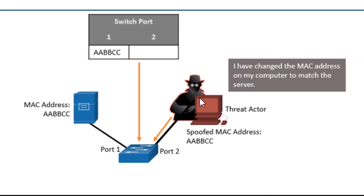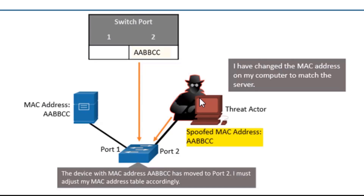Regarding our threat actor — they're connected to a switch on port 2, and they see the MAC address of the server existing on port 1. The switch understands that the server resides on port 1. But if the threat actor spoofs the MAC address of the server and communicates to the switch, the switch will learn that MAC address AABBCC — which was the server's MAC address — is now incoming on the ingress of port 2. Thus the switch says, 'I understand that AABBCC has moved and now exists off port 2,' so whenever it must send traffic to the server, it will send it out on port 2.